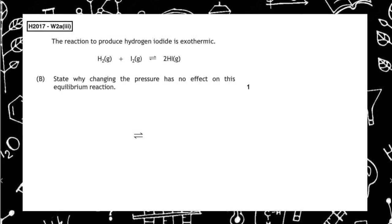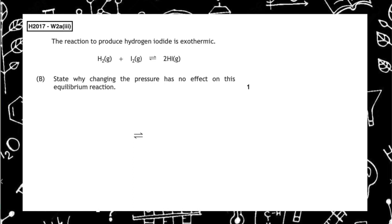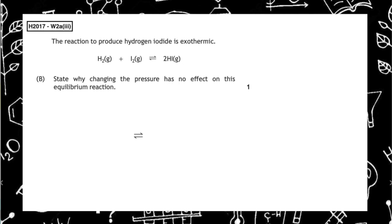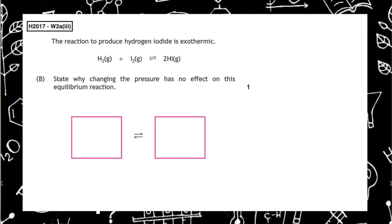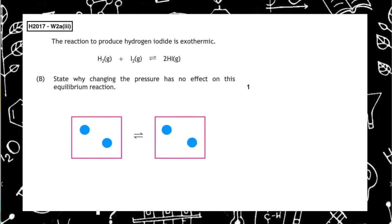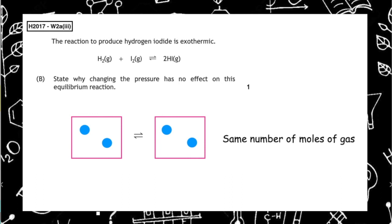In the same past paper question, part B asks us to state why changing the pressure has no effect on this equilibrium reaction. Remember, pressure affects gas particles. Drawing a box for reactants and a box for products, we have a total of two moles of gas on the left-hand side and two moles of gas on the right. The reason that pressure has no effect is because there are the same number of moles of gas on both sides of the equation.